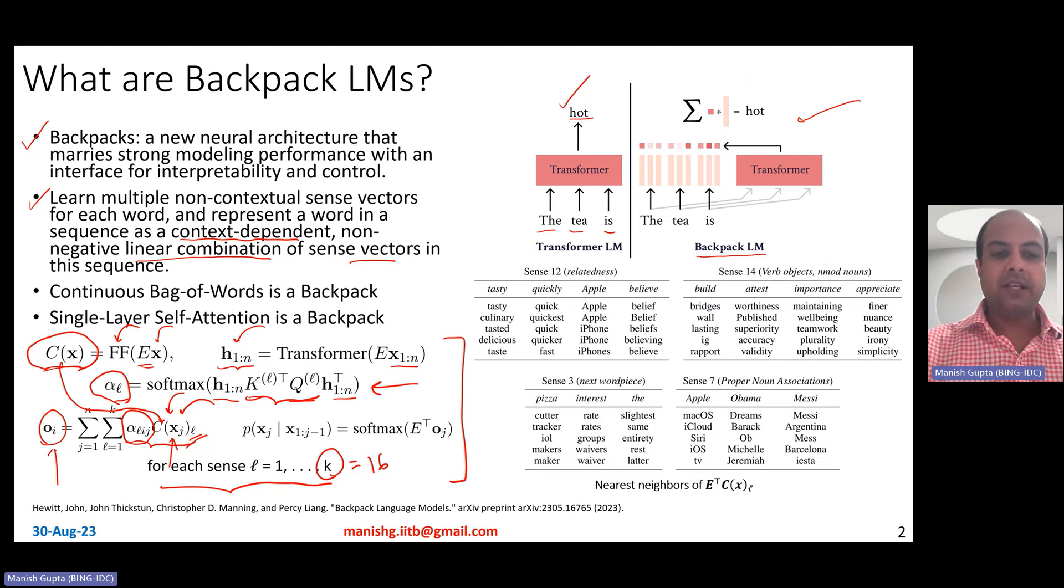So rather than using the V vector or the values, you essentially use the sense representation C that you had learned right there. Now, of course, once you get the O, you take these O's and you multiply by the output embedding matrix so as to essentially predict the next word, predict the next word xj. Notice that the input embedding matrix E and the output embedding matrix E are both tied to each other. That is why you see the same character E being used here. So in fact, what they also show in the paper is that not just this backpack model is of course a backpack language model, but then even continuous bag of word model where you essentially just take average word for two vectors is also a backpack. In fact, single layer self-attention is also a backpack.